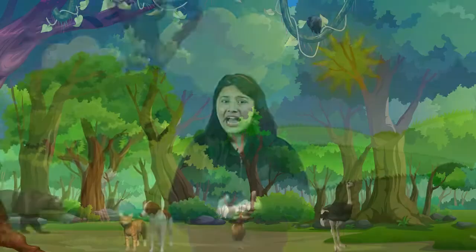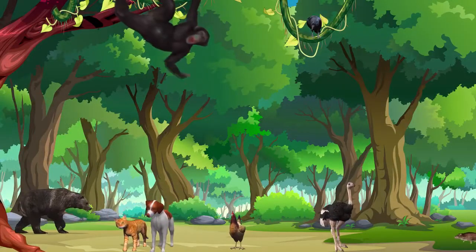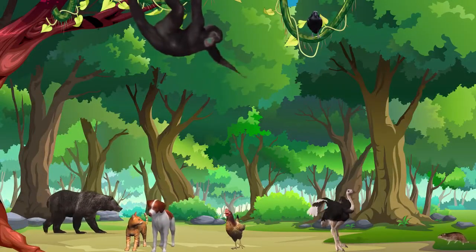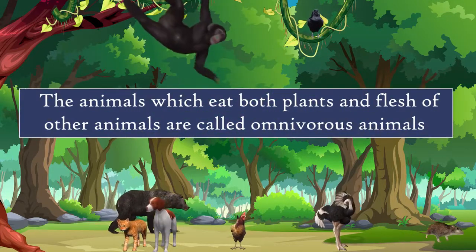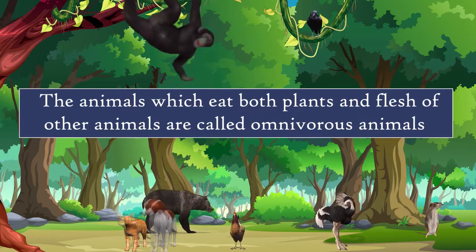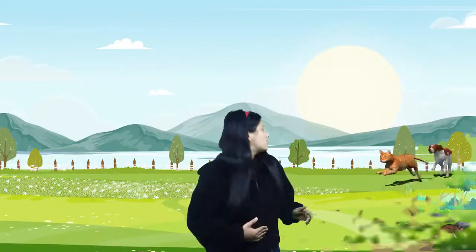The animals which eat both plants and flesh of other animals are called omnivorous animals. Dog, cat, crow, hen, etc. are examples of omnivorous animals. Birds eat grains as part of their food.